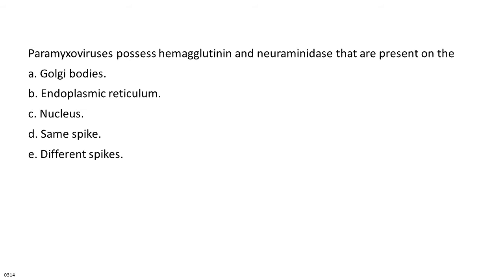The paramyxoviruses possess hemagglutinin and neuraminidase that are present on the: A. Golgi bodies. B. Endoplasmic reticulum. C. Nucleus. D. Same spike. E. Different spikes.